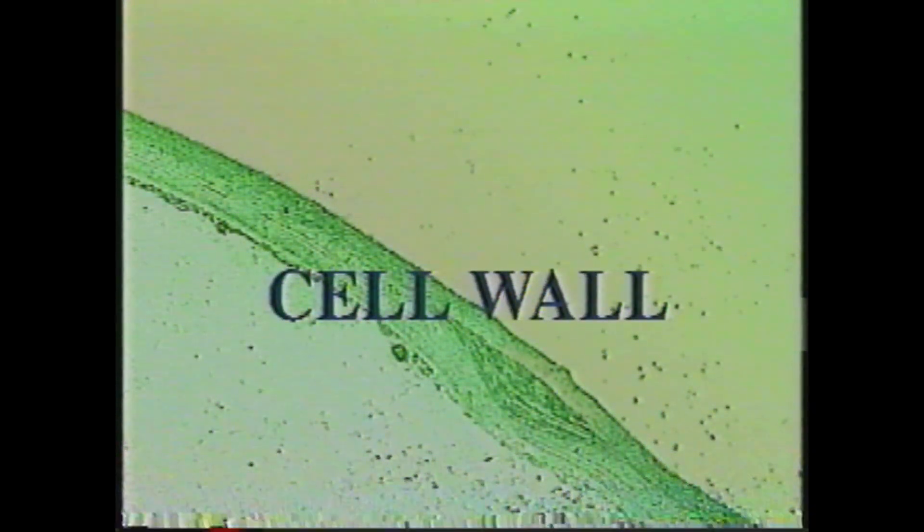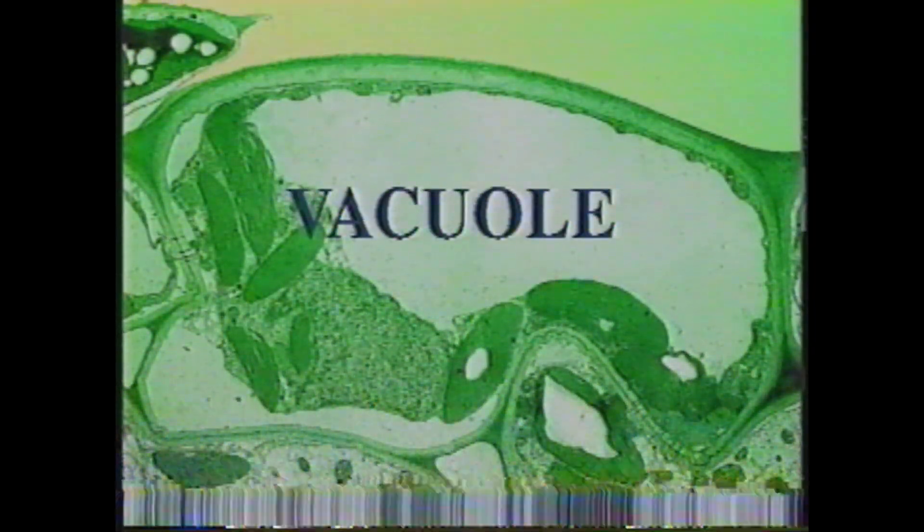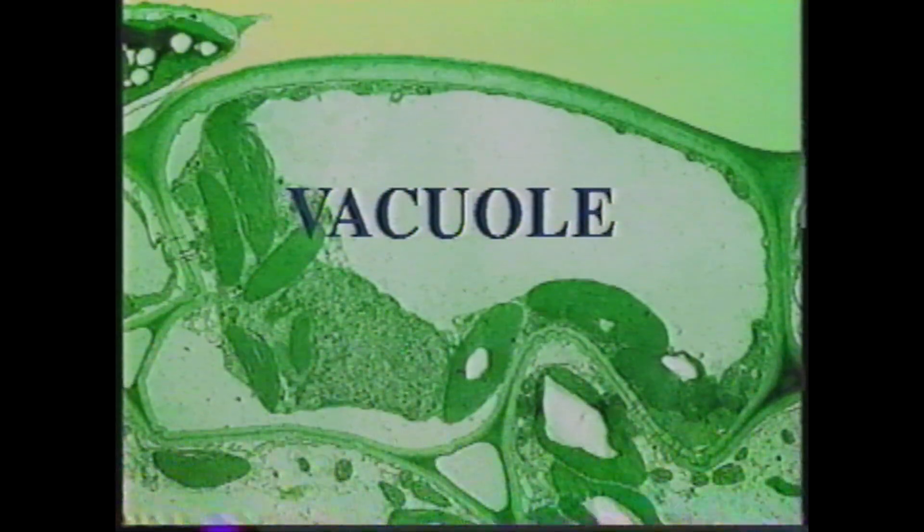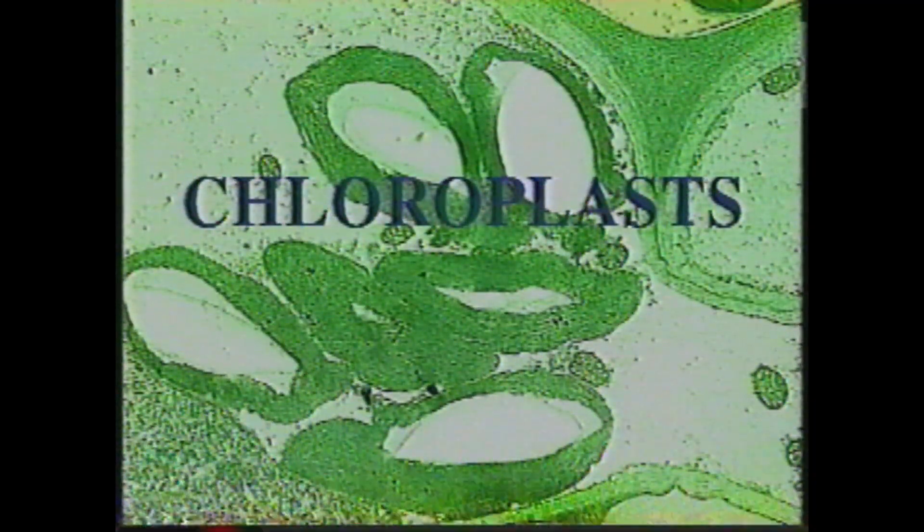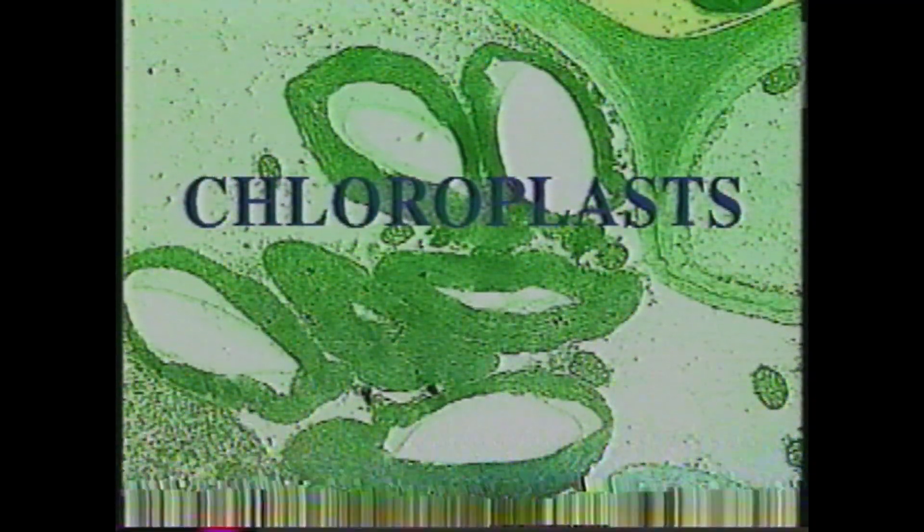Under the electron microscope, we see that plant cells contain several additional structures not generally found in animal cells. For example, many plant cells have a cell wall — a rigid layer that surrounds the membrane and provides support. The larger white area is called a vacuole, which stores material for use in the cell. These organelles are called chloroplasts, and they allow plants to convert sunlight into food and energy, a process known as photosynthesis.